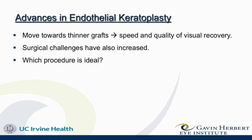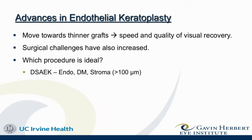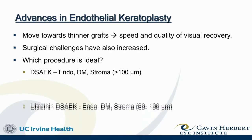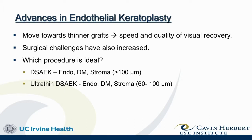We've got a whole alphabet soup of EKs to choose from. The big push we're seeing is a movement towards thinner and thinner grafts because of speed and quality of visual recovery, but surgical challenges have also increased and limited us in certain ways. So which procedure is ideal? DSEK — where we take endothelium, Descemet's membrane, and stroma — with traditional DSEKs as thick as 140 microns. Ultra-thin DSEK has less posterior stroma, and even nano-DSEK can get tissue as low as 40 microns.